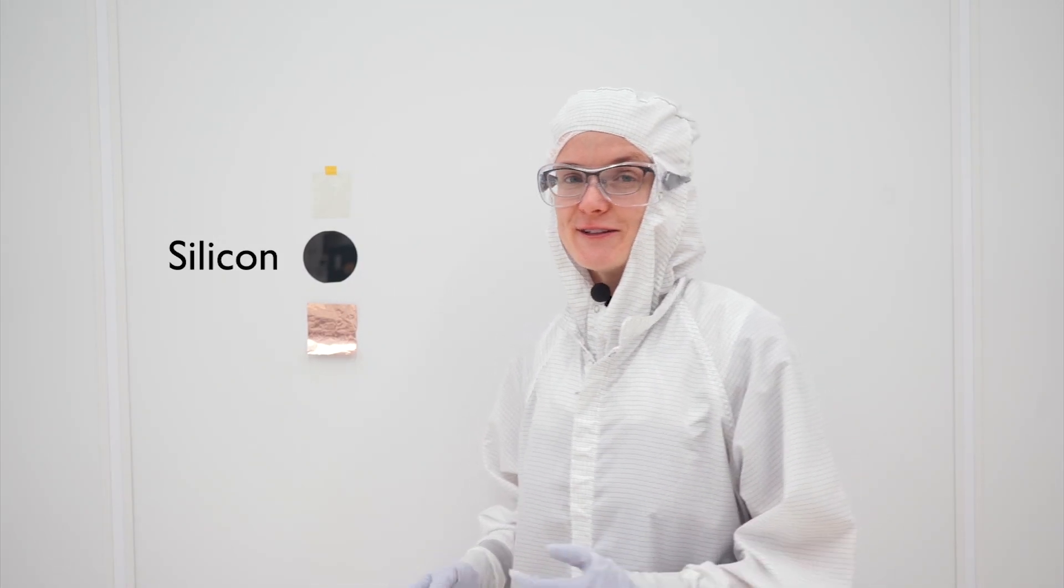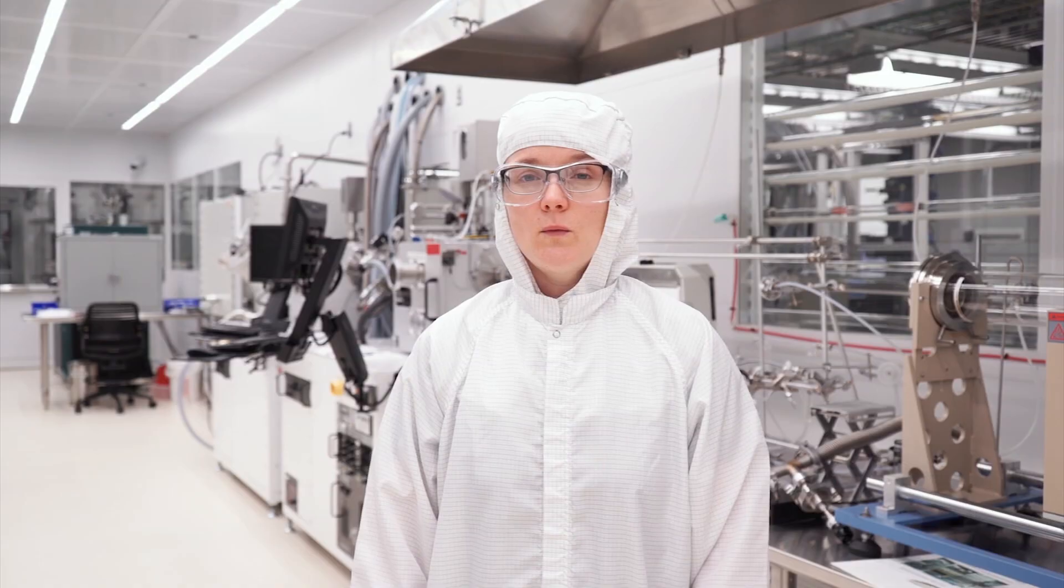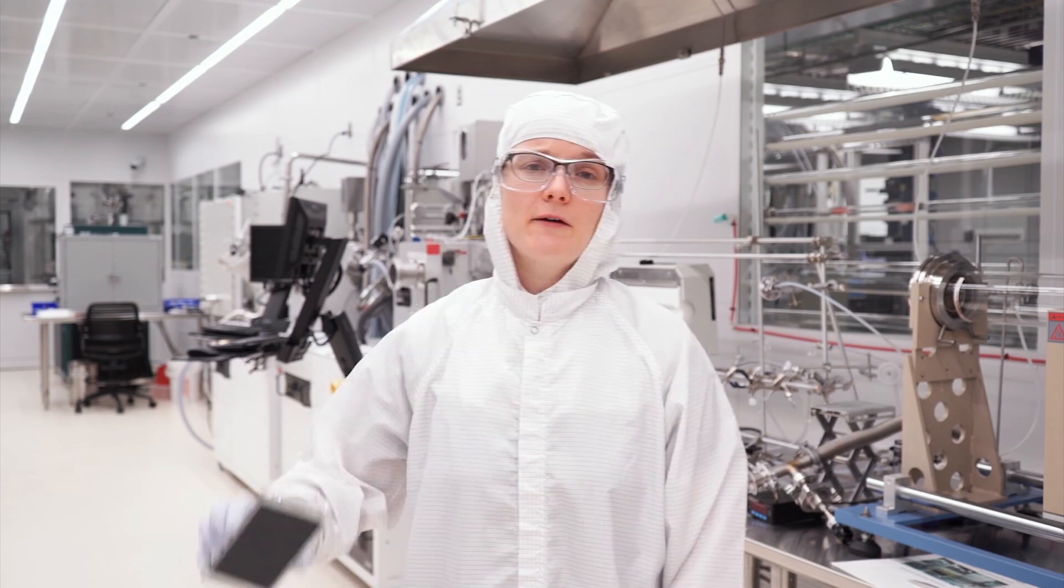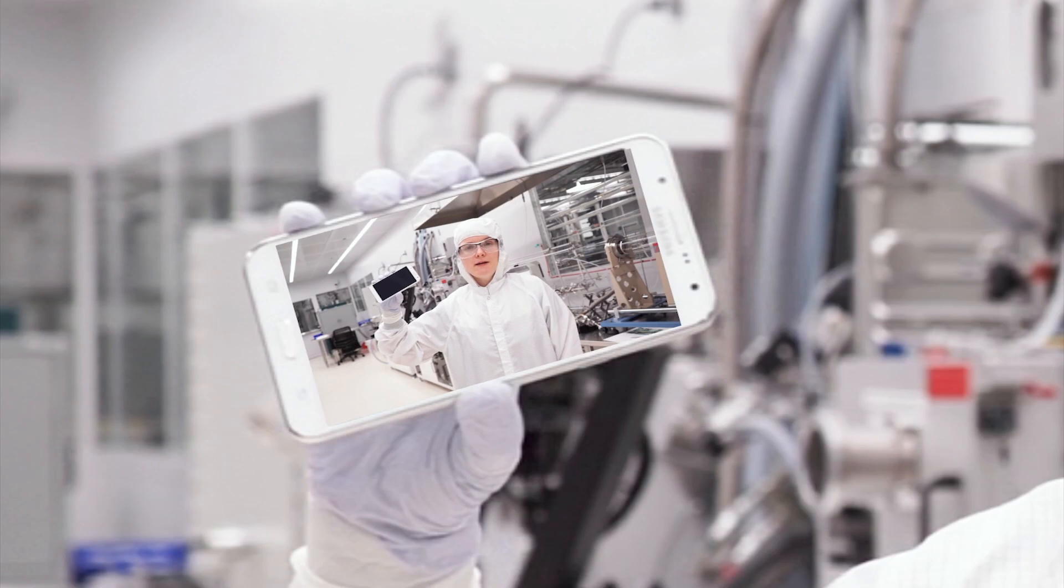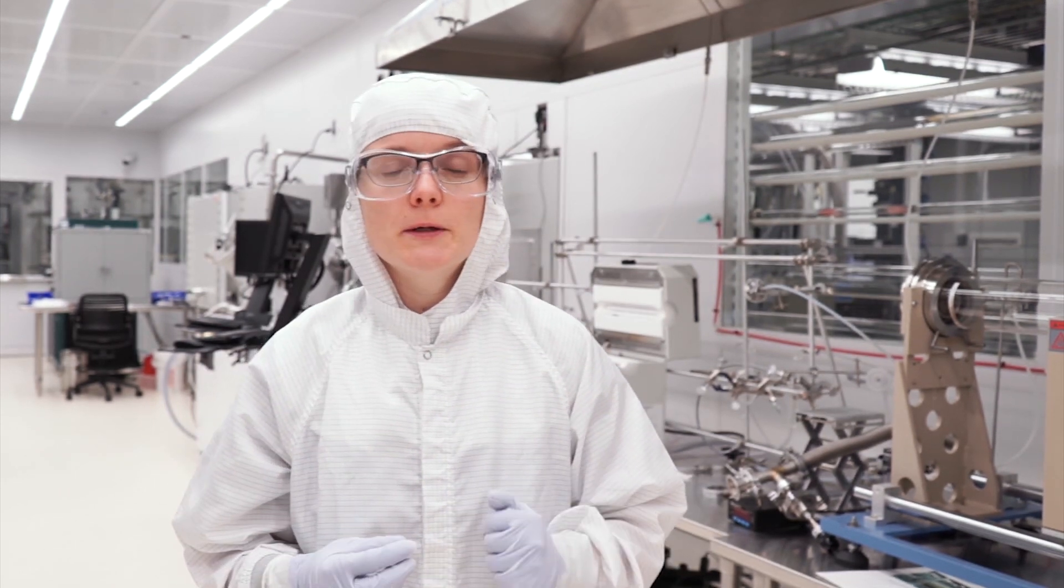Silicon is a semiconductor, which means it has electrical characteristics between a metal and a plastic. But why should you care? Well, there's a high probability that you're carrying around a smartphone right now. You may even be watching this video on one. And that means you're carrying around a tiny piece of silicon in your pocket.